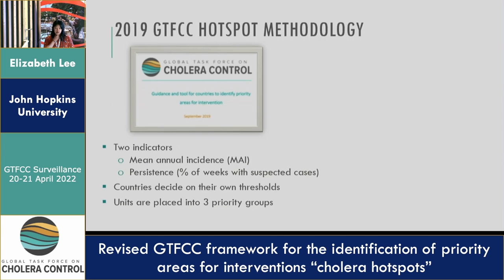We actually developed a version of this guidance in 2019, which went through all of the approval processes in September 2019. You can find this guidance on the GTFCC website — it's called Guidance and Tool for Countries to Identify Priority Areas for Intervention. The primary features were based on two indicators: mean annual incidence, and what we call persistence — the percentage of weeks with any reported suspected cases over the entire period of study. The guidance was quite flexible in terms of how countries determine thresholds for each indicator, and locations that exceeded the thresholds in both dimensions would be considered high priority areas for intervention.